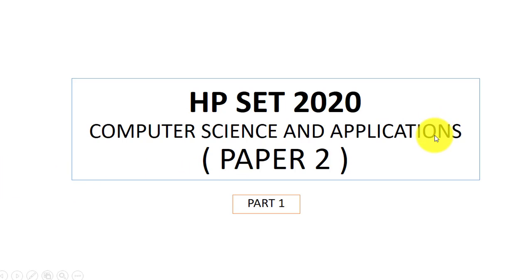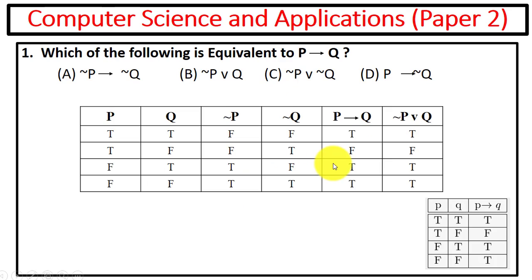Hello, this is HP SET Computer Science and Applications Paper 2 question answer. First question, you can see here we have to find out which of the following is equivalent to P implies Q.